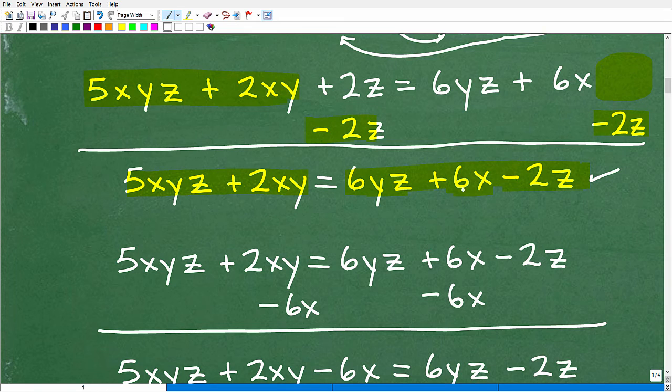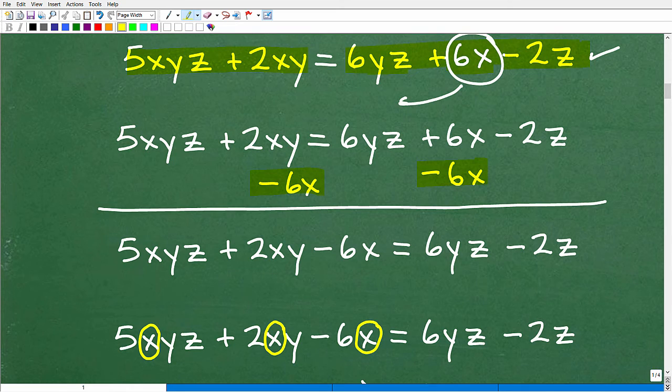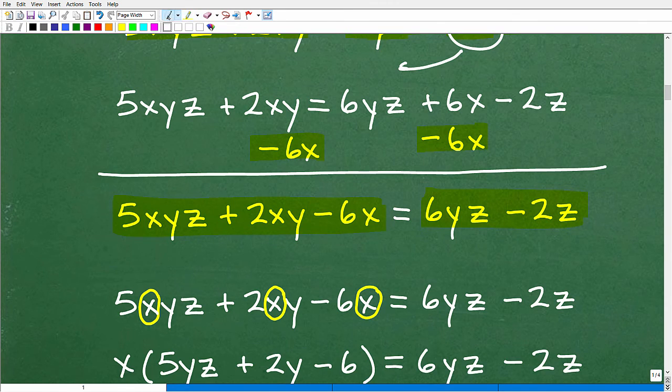Now I've got to get that 6x over here because I want to get all my x's on the left-hand side of the equation because I'm going to be solving for x. Okay, so how do I get rid of, or how do I move this positive 6x now over here? Well, what I need to do now is subtract 6x from both sides of the equation. Okay, so when I do that, I'm going to get 5xyz plus 2xy minus 6x. That's the result of that. And then here, this 6x went away, right? Because I subtracted away that 6x. So I'm left with 6yz minus 2z on this side of the equation.